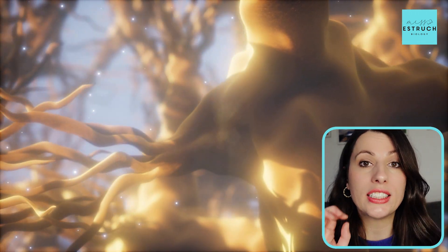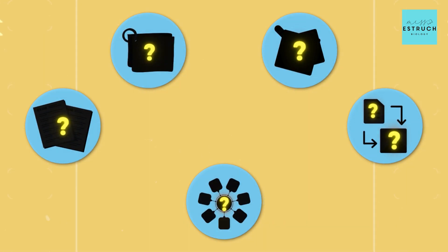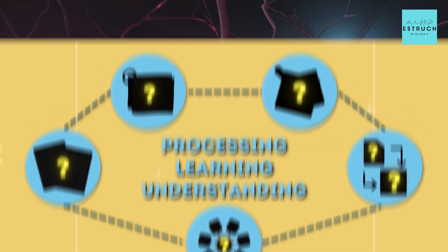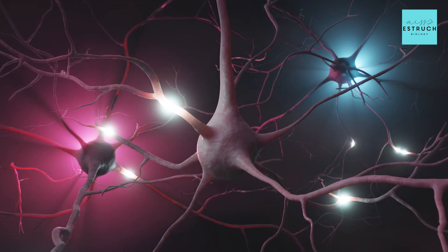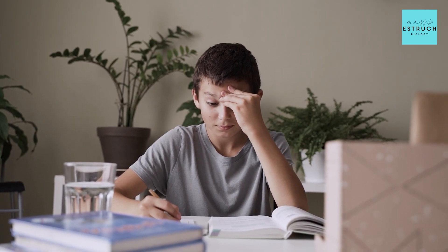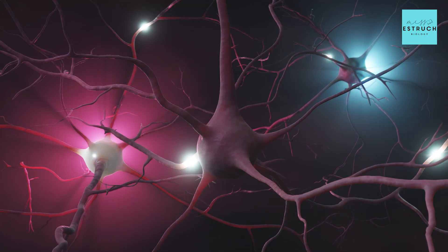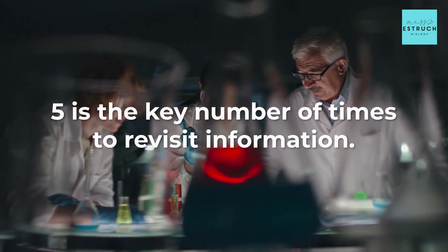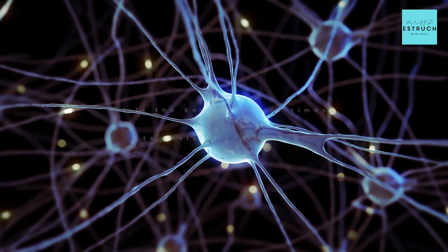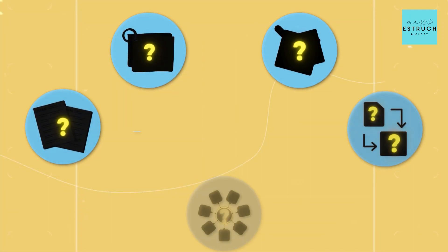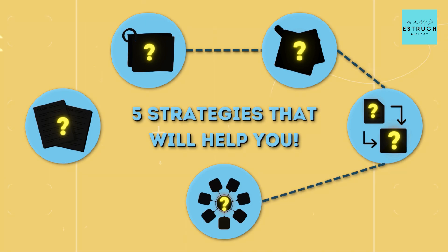Here's the science of how you actually remember and learn information. When you first take in information it is just a series of disconnected facts in your brain — think of it as disconnected circles. When you make connections between these pieces of information, that is you processing, learning, and understanding, starting to create a neural pathway. The more times you revisit that fact and the connection, the stronger the neural pathway. Scientists have found that five is the key number of times to revisit information to make it a really strong long-term memory.